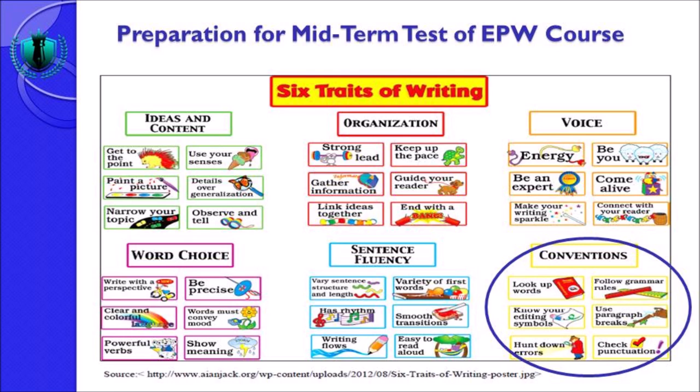Yang terakhir, check punctuation — simple tapi penting. Perhatikan penggunaan huruf kapital — awal kalimat harus selalu huruf kapital. Kalimat yang berakhir harus diakhiri dengan tanda titik. Bedakan penggunaan masing-masingnya. I have explained to you six traits of writing.